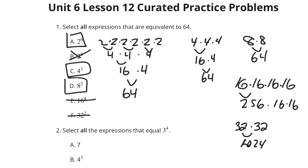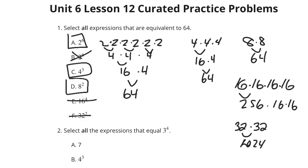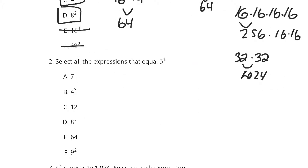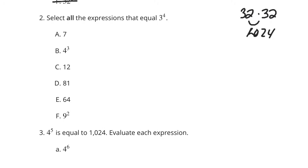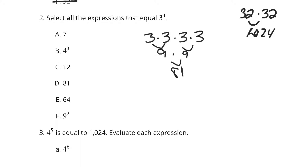So A, C, D. Question 2: select all the expressions that are equal to 3 to the 4th. Let's figure out what 3 to the 4th is. 3 to the 4th is 3 times 3 times 3 times 3. Well, that's 9 and another 9, which is 81. So 3 to the 4th is not 3 plus 4, so it's not 7.